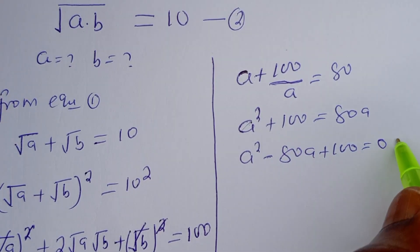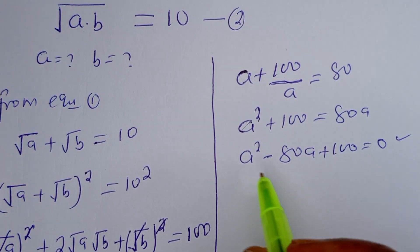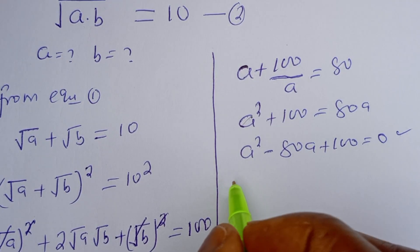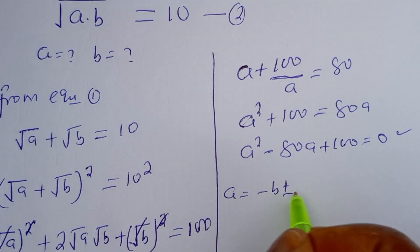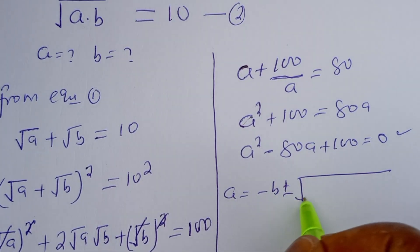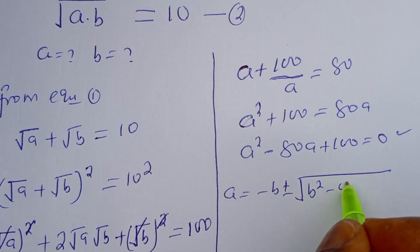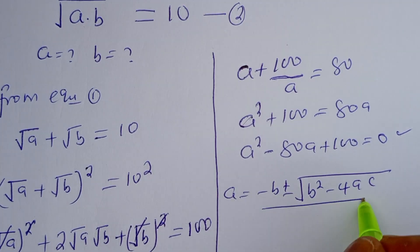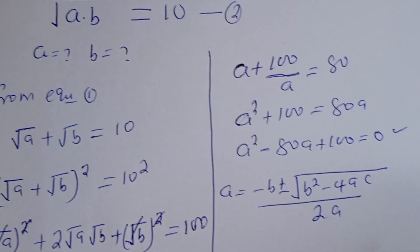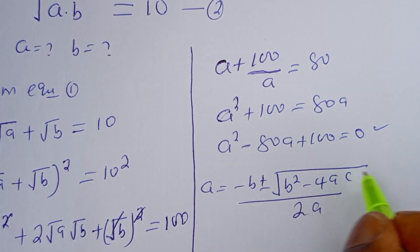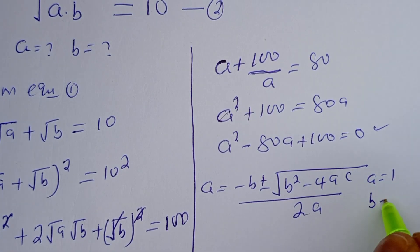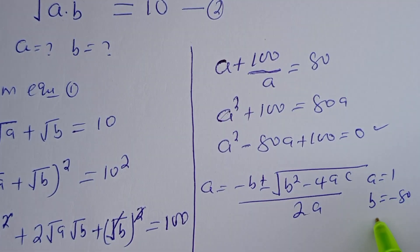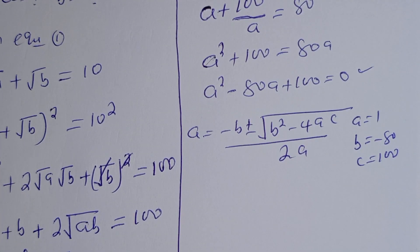Then A squared minus 80A plus 100 is equal to 0. This is a quadratic equation which can be solved using the quadratic formula. The general formula is x equals negative B plus or minus square root of B squared minus 4AC, all over 2A. From this equation, the coefficient A equals 1, B equals negative 80, and C equals 100.